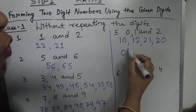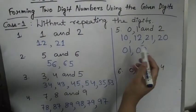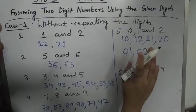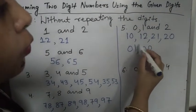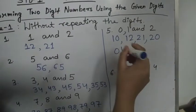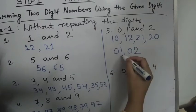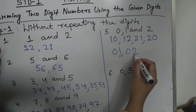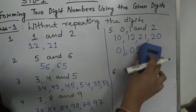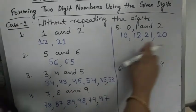We will not write 0,1 or 0,2 because if we write 0 in the tens place it has no value — we are getting only a one-digit number. But here we have to make two-digit numbers, so 01 and 02 are one-digit numbers. So those are not written — the answer is only 10, 12, 21, and 20.